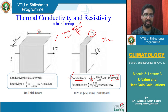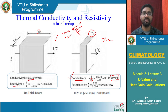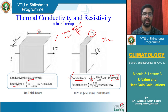For a material with conductivity of 0.036 W/m·K, the resistivity — the ability of the material to resist — is 1 divided by conductivity, which is 1/0.036. The units of resistivity are reciprocal to the units of conductivity. This is the resistivity of that material for 1 meter thick board.